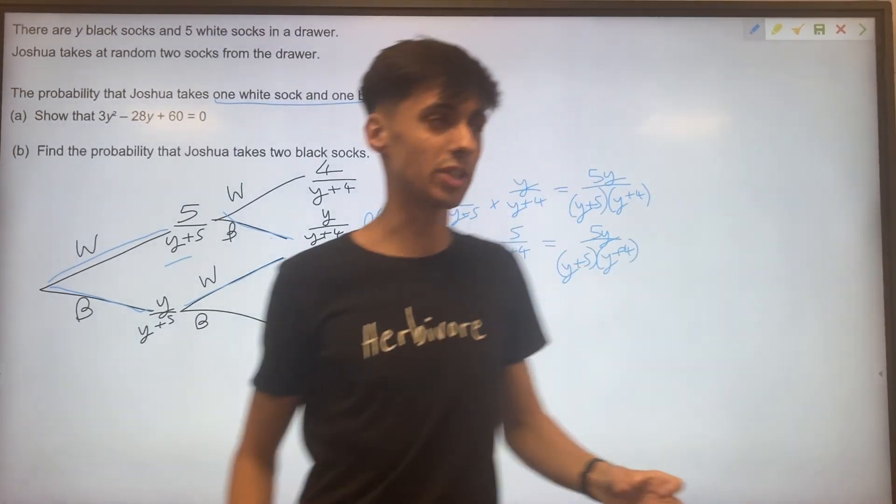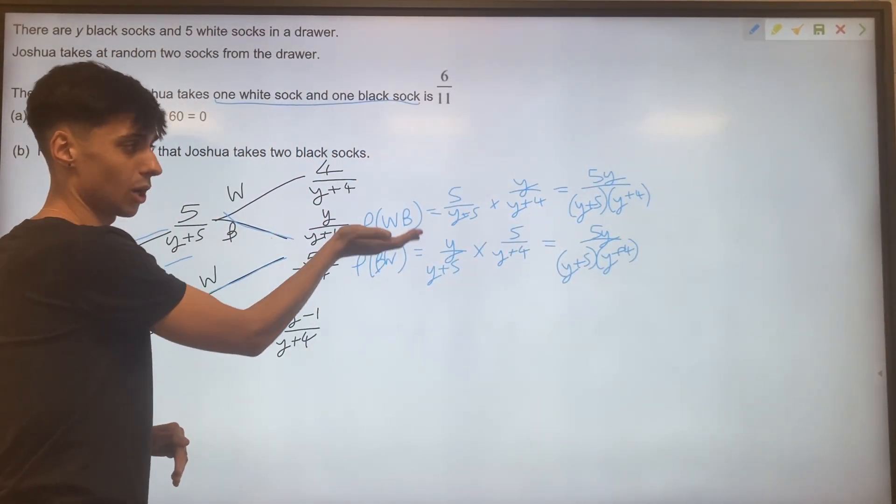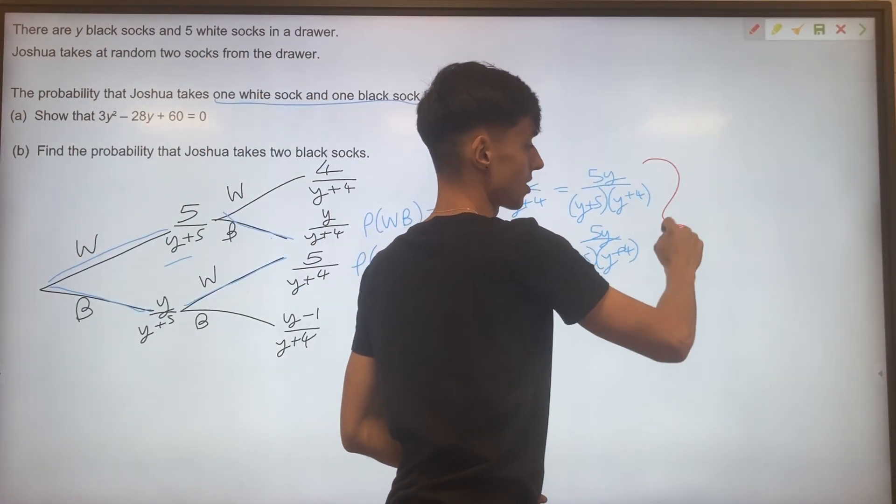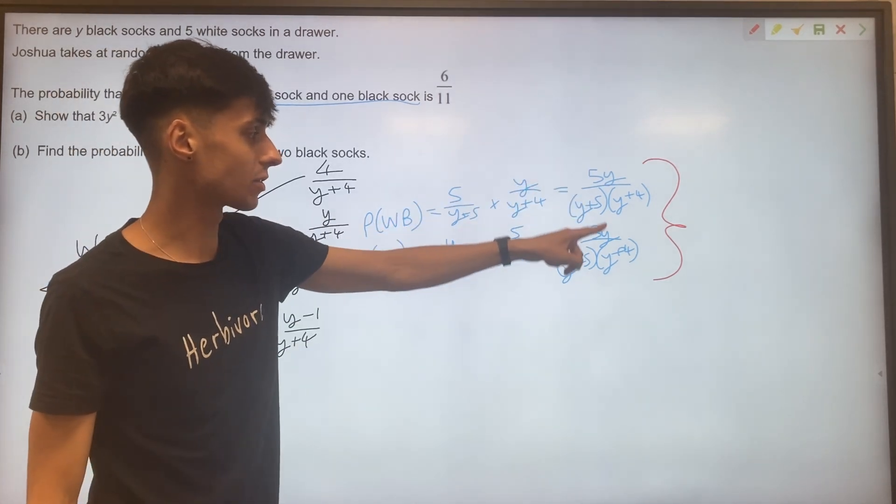So thinking about how we use tree diagrams, if you want either of these two outcomes to be possible, that means we are doing a sum or adding these two up. So when we add the two of these,